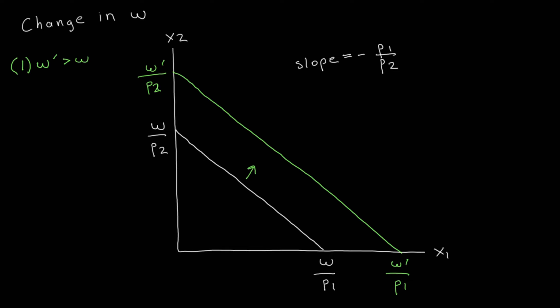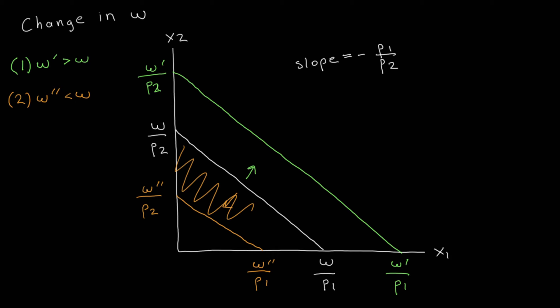When the income level decreases to W double prime, we get the opposite scenario. The budget line shifts below and to the left in a parallel shift, with new intercepts W double prime over P2 and W double prime over P1. Intuitively, the consumer's income is reduced, so bundles that were affordable before are no longer affordable. The consumer can only afford everything below and to the left of the new budget line — that is the new budget set.